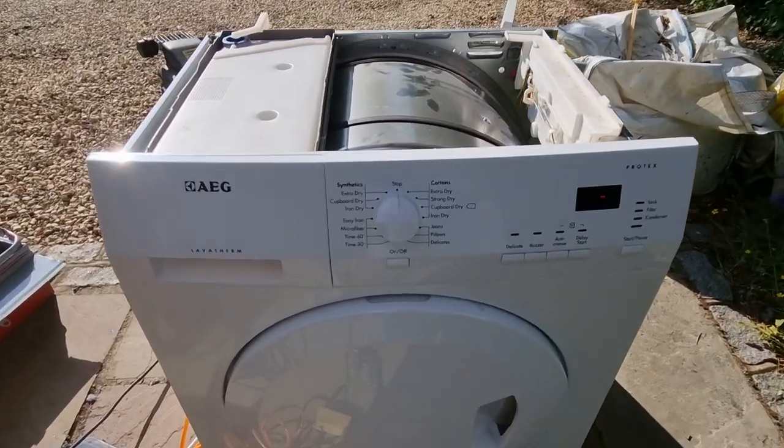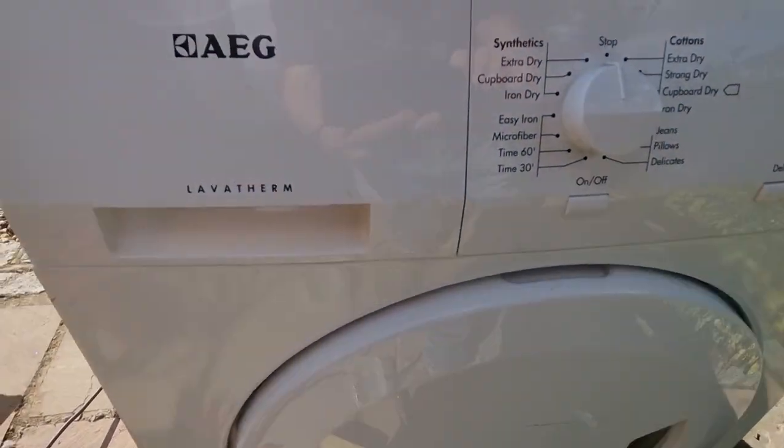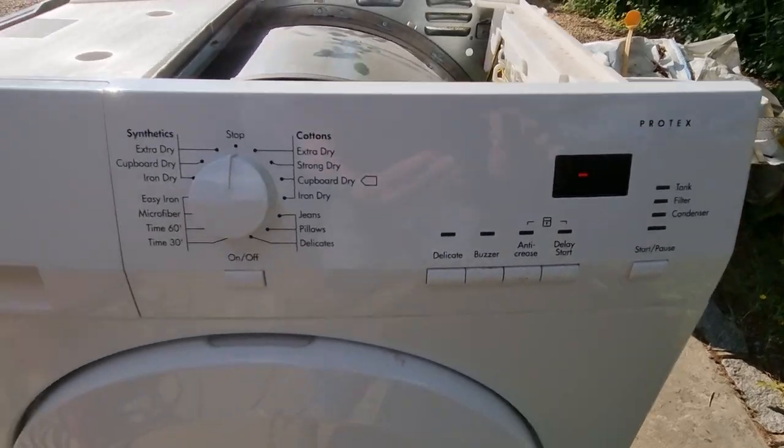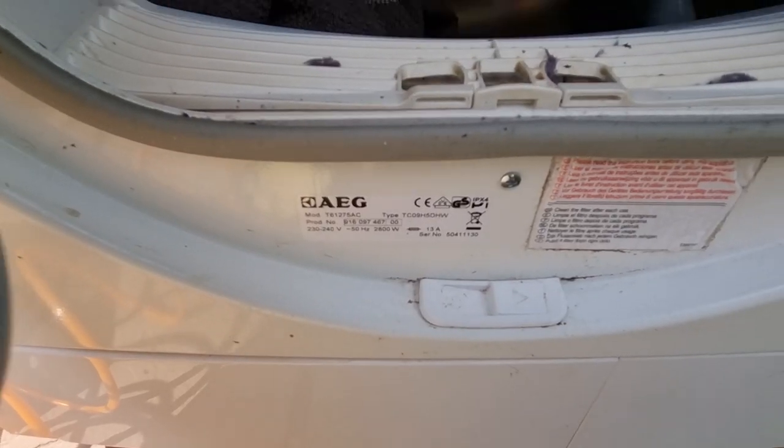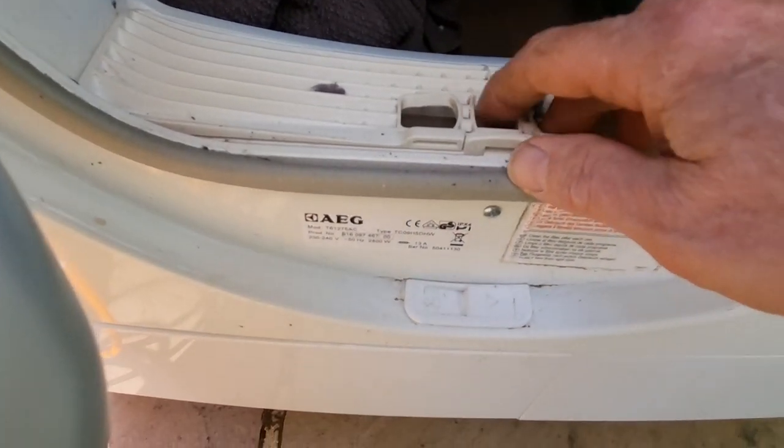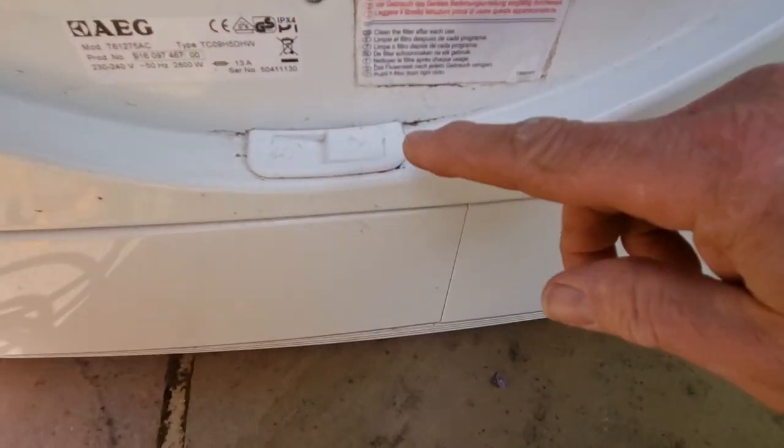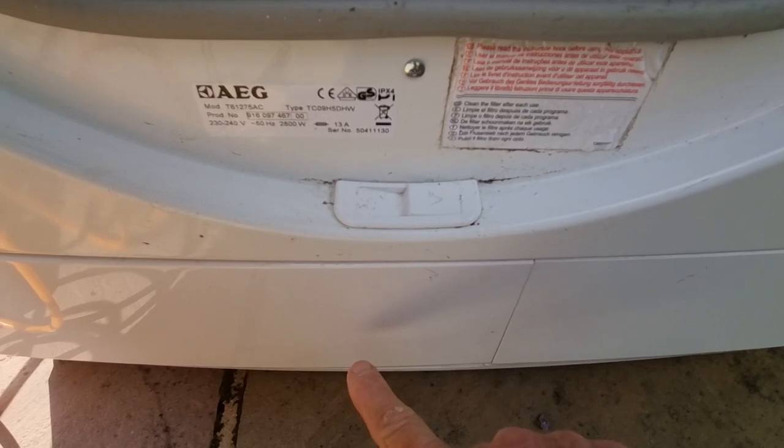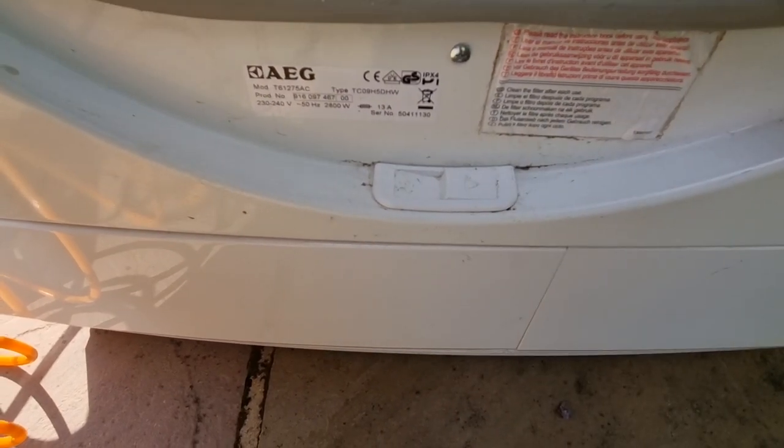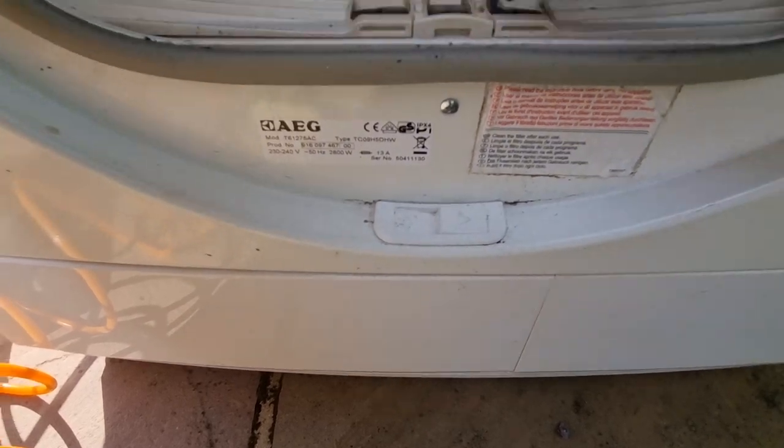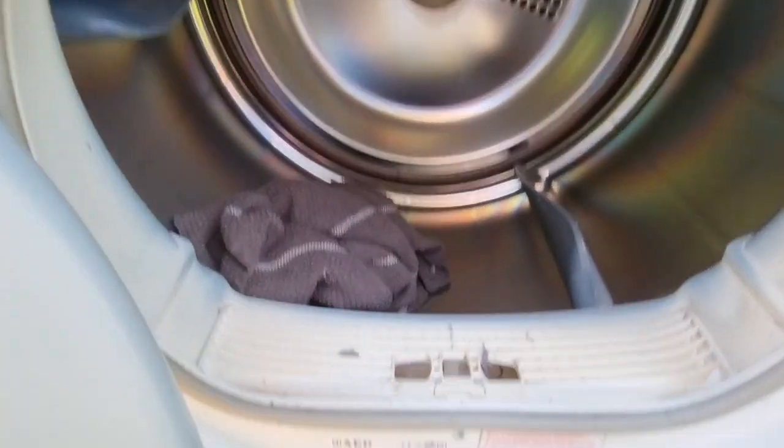I've got a very nice tumble dryer, an AEG Lava Mat Protex. If you're interested in the model number, you've got your model number down there. You've got your filter, and the catch release for the condenser which you have to clean every month or so. Obviously clean the filter out every time, but that's straightforward.